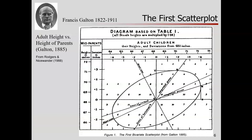We've seen this picture before — this is one of the first scatter plots ever created. It's one of the phenomena Galton among others was investigating: looking at scatter plots and relationships among the heights of parents and the heights of children, trying to understand these characteristics. It was in this context that the techniques of correlation and regression were invented — or more precisely, that the phenomenon of regression to the mean was discovered.